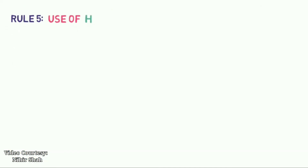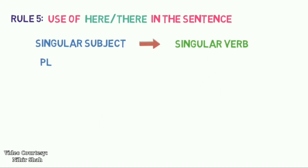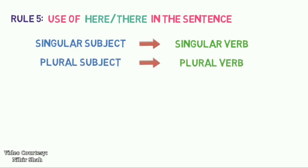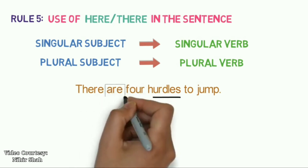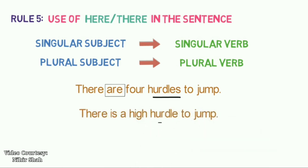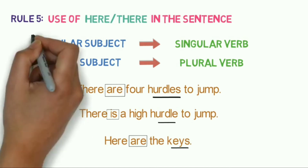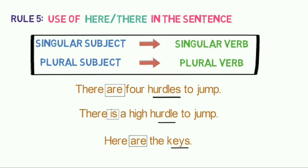Rule 5: Use of 'here' or 'there' in a sentence. In sentences beginning with 'here' or 'there,' we use the general rule: a singular verb is used when the subject is singular, and a plural verb is used when the subject is plural. For example: 'There are four hurdles to jump.' For the plural subject 'hurdles,' we use 'ARE.' 'There is a high hurdle to jump.' For the singular subject 'hurdle,' we use 'IS.' 'Here are the keys.' For the plural subject 'keys,' we use 'ARE.'